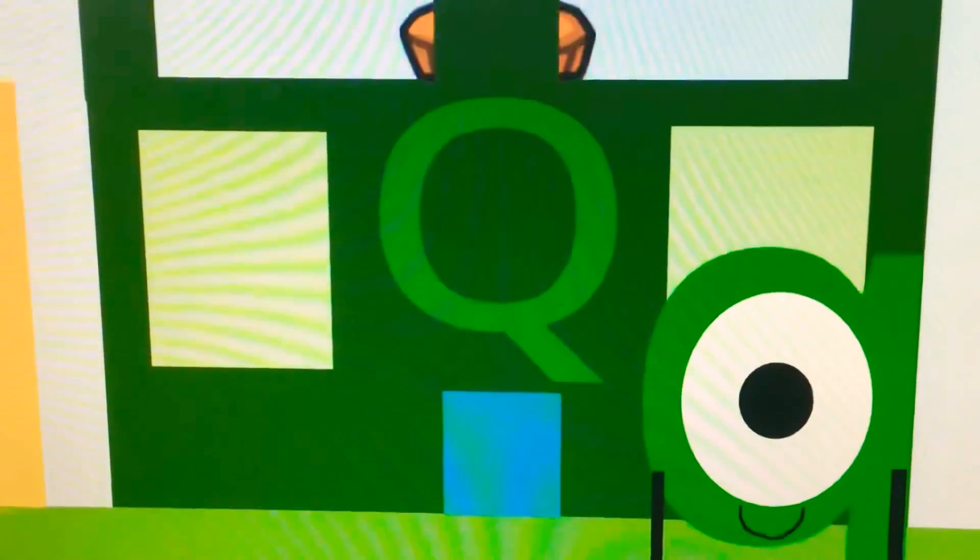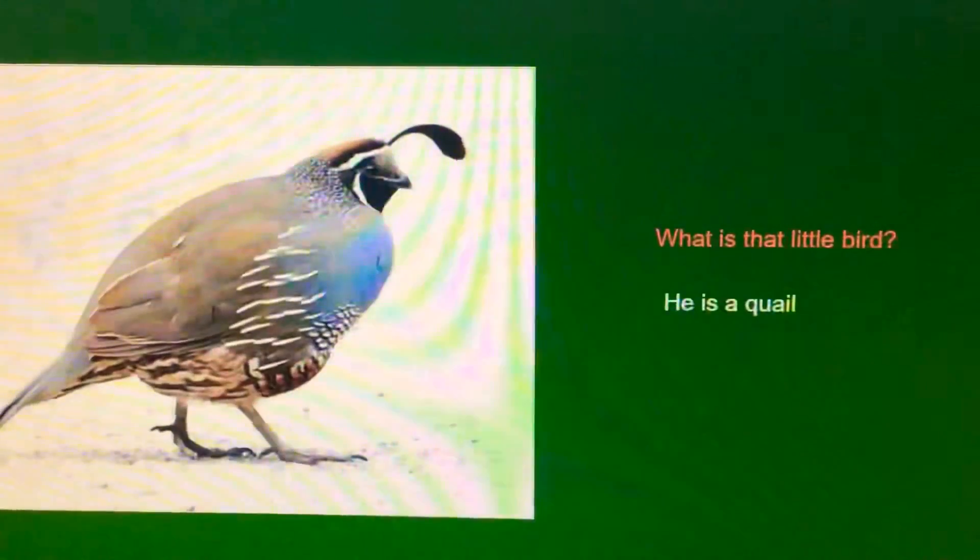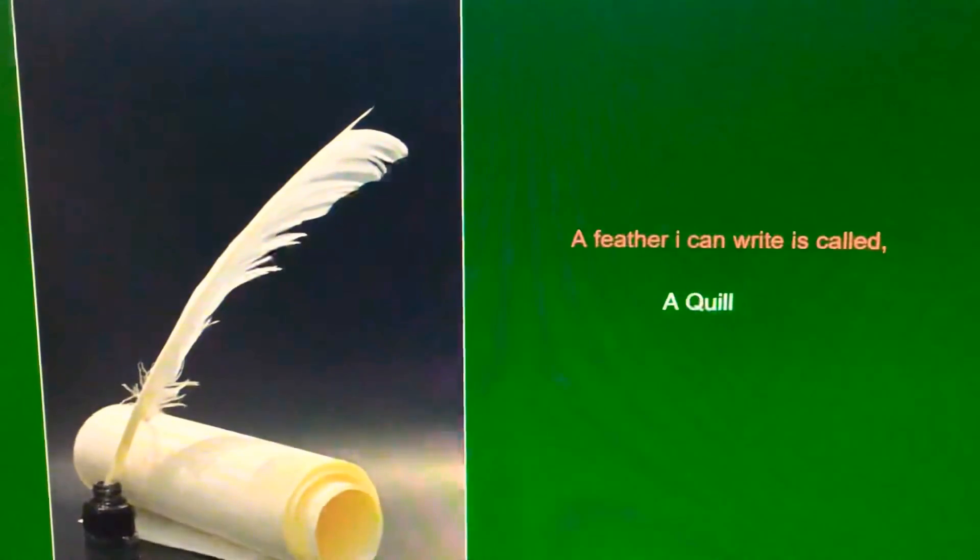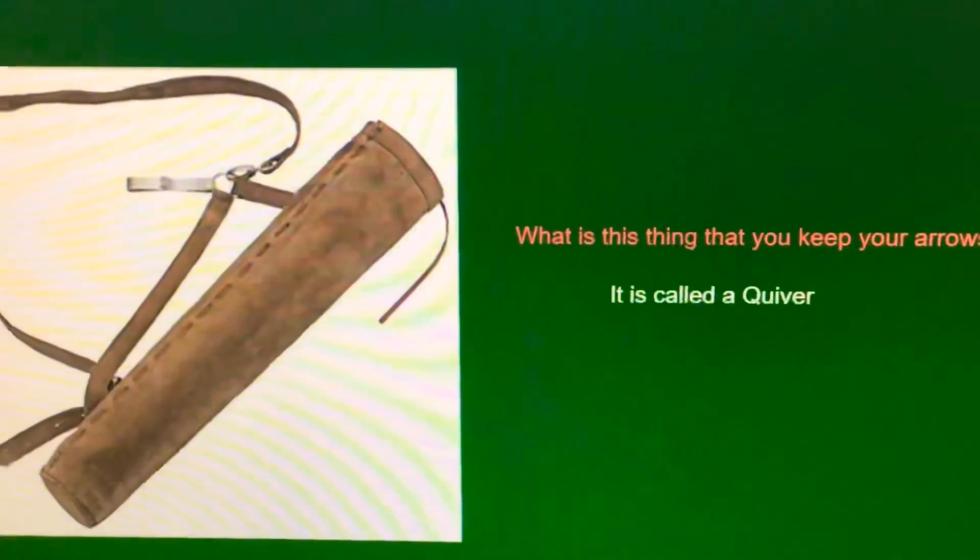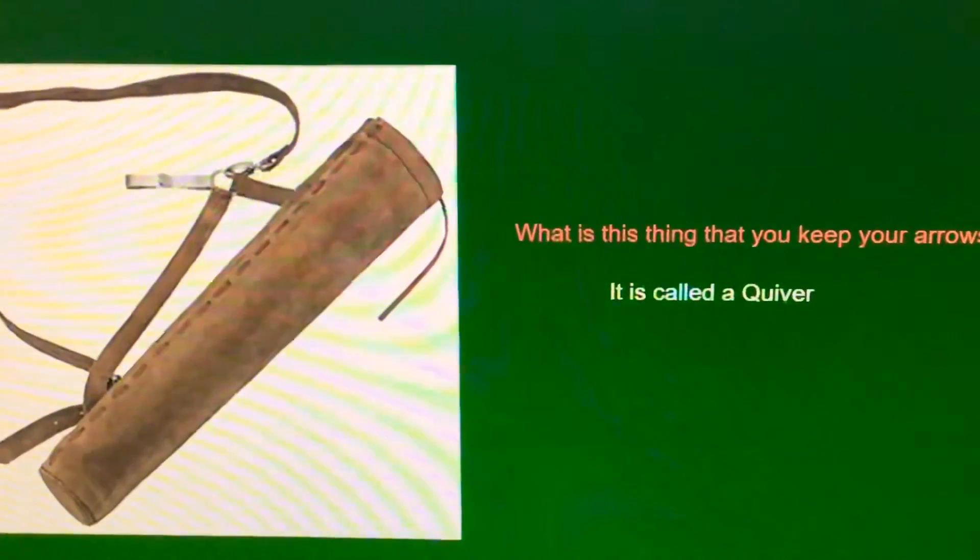Q-Q-Q, question for Q. Q-Q-Q, question for Q. Q-Q-Q, tell me have you got a question for Q? Q-Q-Q. What is this little bird? He is a quail. A feather I can write with is called a quill. What is this thing that you keep your arrows in? It is called a quiver.